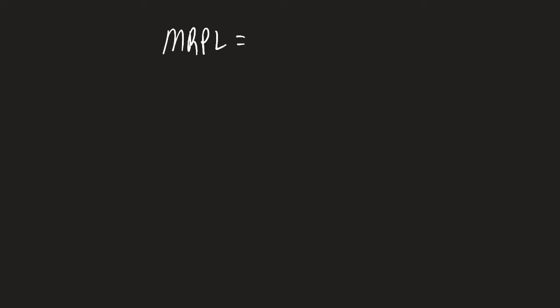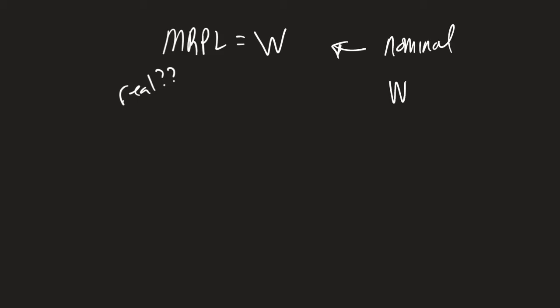We just got done talking about MRPL equaling the nominal wage being the profit-maximizing condition in nominal terms. But what if we want to talk about this in real terms? The nominal wage is going to be equal to something like $15. Nominal means we're looking at it in terms of that dollar amount. But what if we want it in real terms? What we mean by real is it's going to be in a number of output.